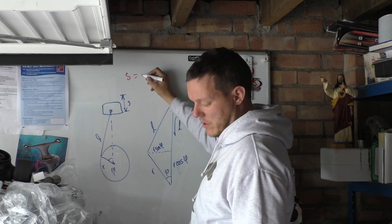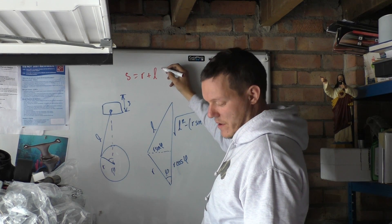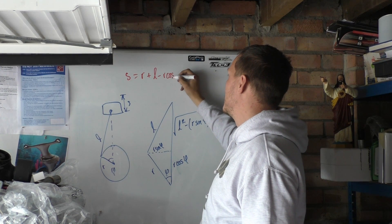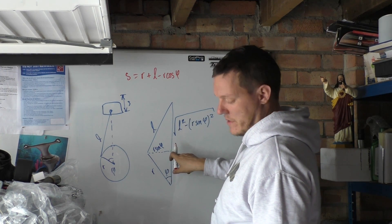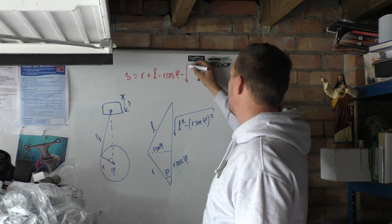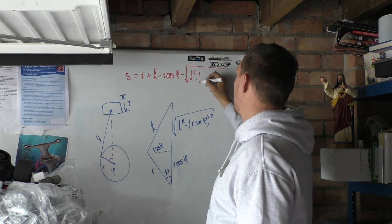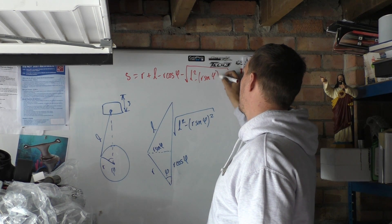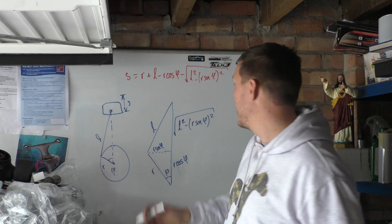So your S equals your R plus L, minus your R cosine phi, and then you've got to minus that against your whole L squared minus R sine. But what you can do is obviously you can break all this down.